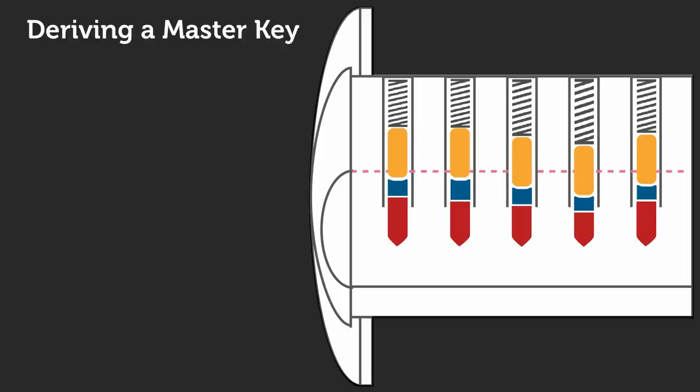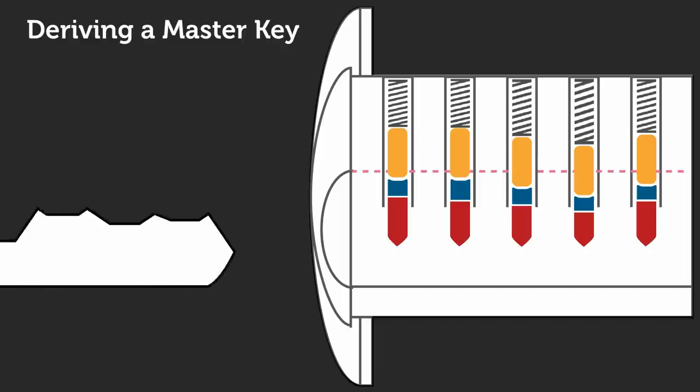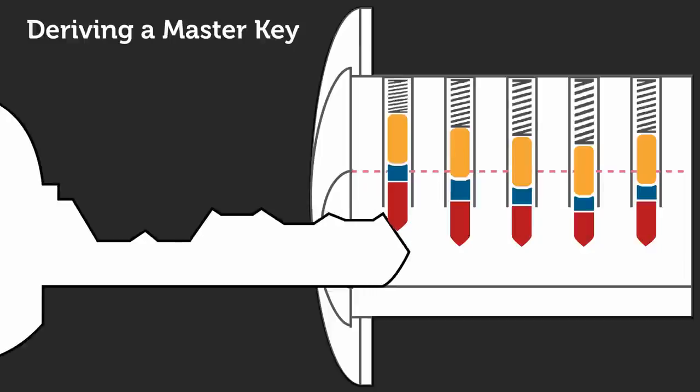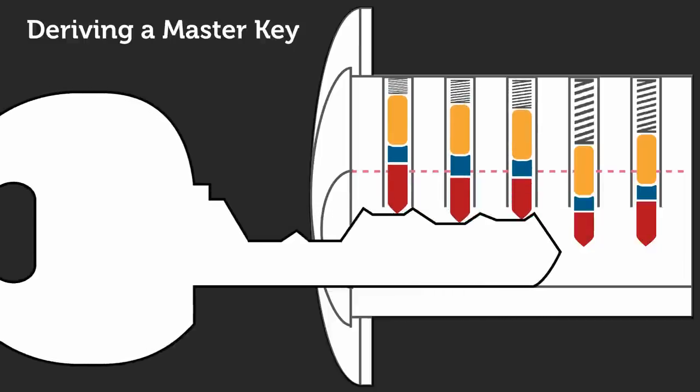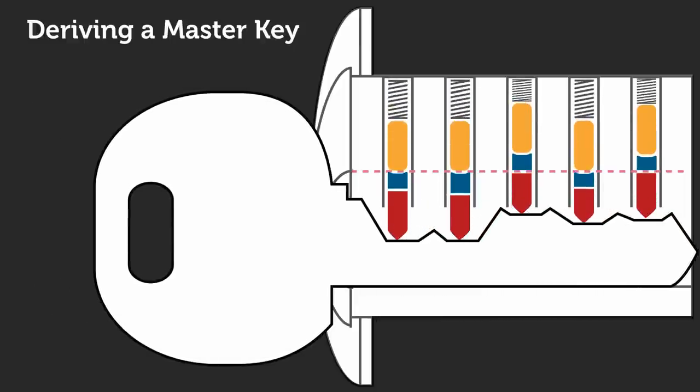Now we should have a good idea of how master keying works. But simply, let's say that this is your user key. When it's inserted into the lock, a couple of the master wafers are breaking at their top shear line, and a couple are breaking at their bottom shear line. What we hope to do is figure out exactly where those breaks are occurring and figure out the opposite shear line for each master wafer as well.